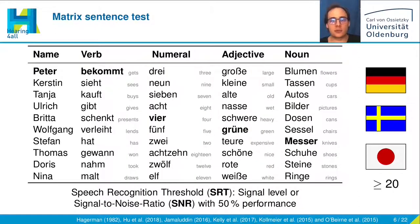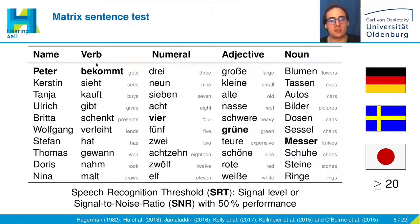The test we are using is the so-called matrix sentence test, or at least the German version of it. It always consists of five words: for the German version, that is name, verb, numeral, adjective, and noun, which can be combined into nonsense sentences like "Peter gets four green knives."